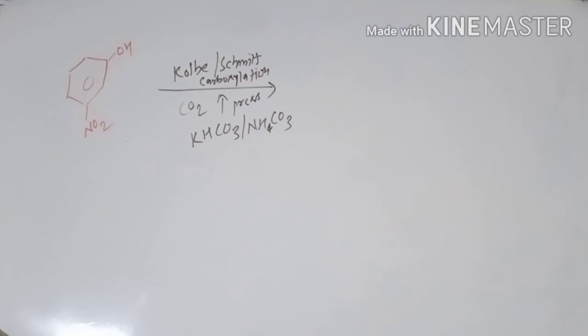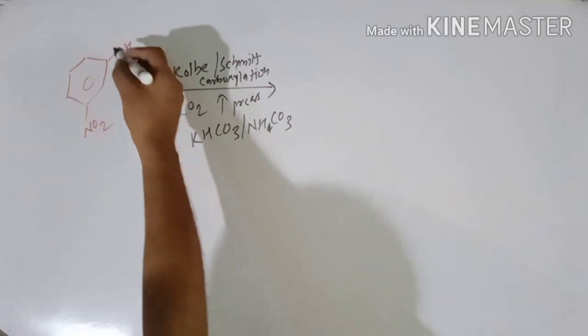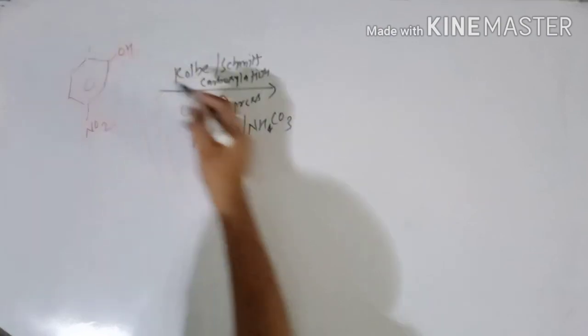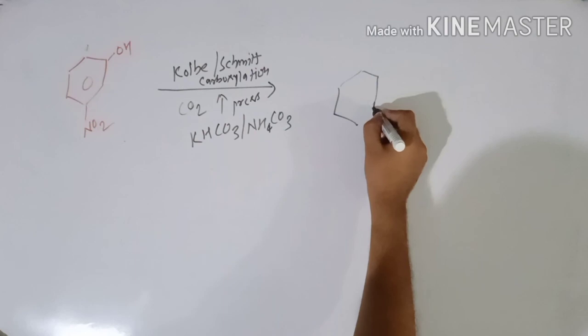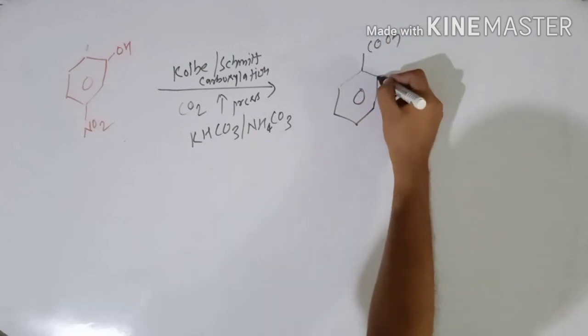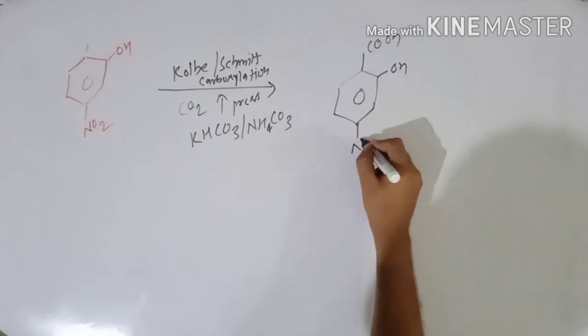This Kolbe-Schmidt carboxylation is a method in which the carboxylation of the ortho position of the phenol group takes place. By this method you can add a carboxyl group directly to the ortho position of the phenol functionality. So here this is the ortho position, so directly the carboxyl group is attached to this position and your following compound is obtained.